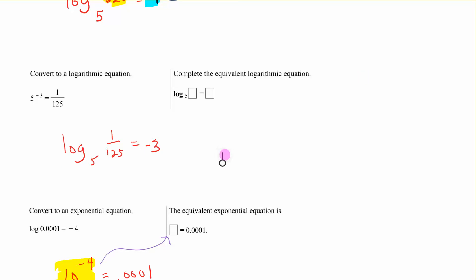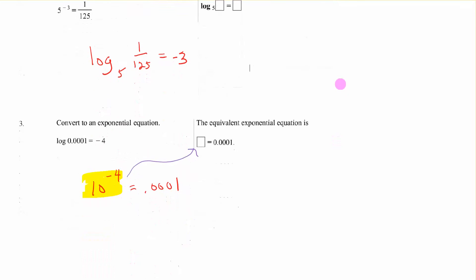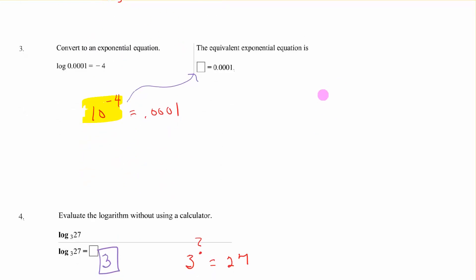5 to the 4th equals 625 changes to log base 5 of 625 equals 4. So you're putting those two items right here. I've color coded that for you. Number 2 is the same way. We are converting to a log equation. 5 to the negative 3 equals 1 over 125. Log base 5 of 1 over 125 equals negative 3. Convert to exponential. There's an understood base here of 10. So 10 to the negative 4 equals this. So the 10 to the negative 4 is going in the box.